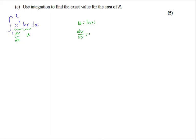So u equals ln x, dv dx equals x squared. We find du dx, which is 1 over x. And we integrate dv dx to find v, which is a third x cubed. Remember, for integration by parts, the integral of this is uv minus the integral of v du dx.